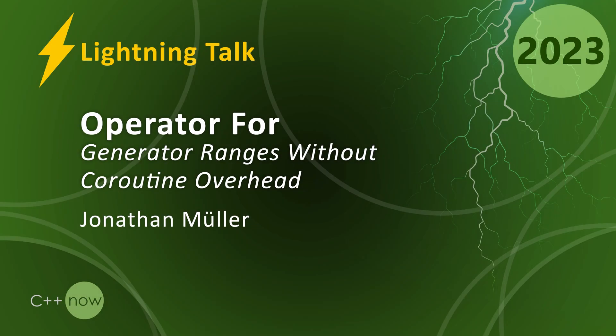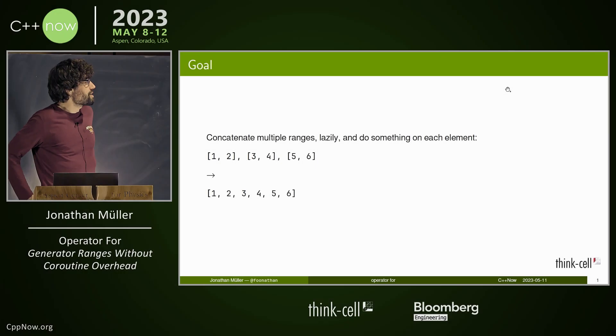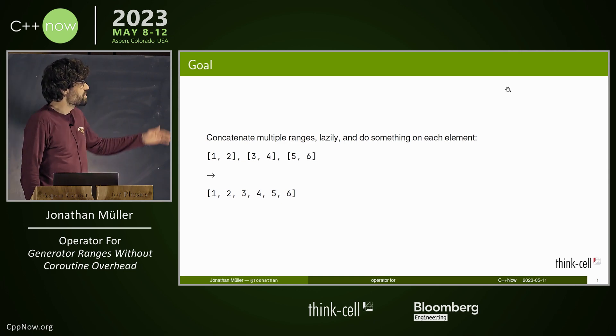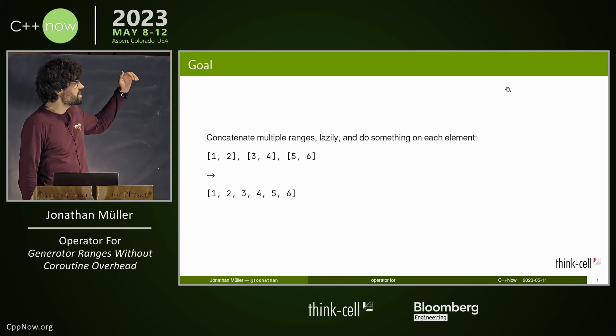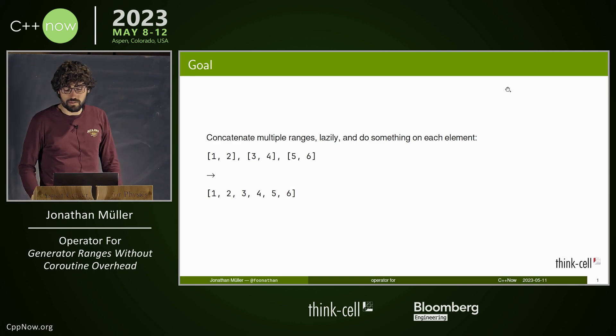I'm here to talk about a language proposal Barry and I worked on — by 'this week' I meant last night. So let's say we want to concatenate multiple ranges, do that lazily, and do something on each element. We've got three ranges and we want to turn them into one and then iterate over them.